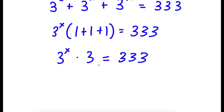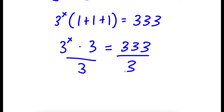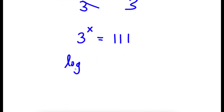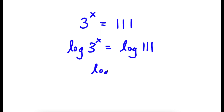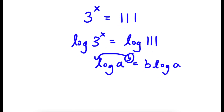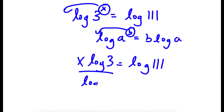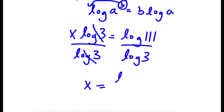Now from here, I'm going to go ahead and divide both sides by 3. So then these two cancel out, and now I have 3 to the power of x is equal to 333 divided by 3, which is 111. Now if I take the log on both sides, I have log 3 to the power of x is equal to log 111. If I have something in the form log a to the power of b, I can move b to the front, so this equals b times log a. So I move x to the front, giving x times log 3 is equal to log 111. Now if I divide both sides by log 3, these two cancel out, and I have x is equal to log 111 over log 3.